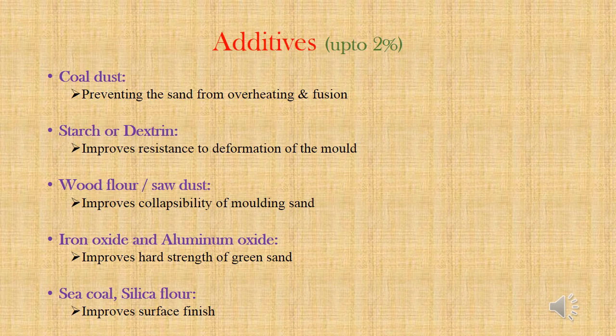Additives are used to enhance the property of molding sand. A very important additive is coal dust. Due to this, molding sand becomes black in color. When molten metal with high temperature comes in contact with molding sand, the sand begins to dry and get hotter. At that time, the function of coal dust mixed with molding sand is to burn and give off CO2 and H2O. Here H2O is nothing but moisture. Because of that moisture, molding sand is prevented from overheating and fusion.